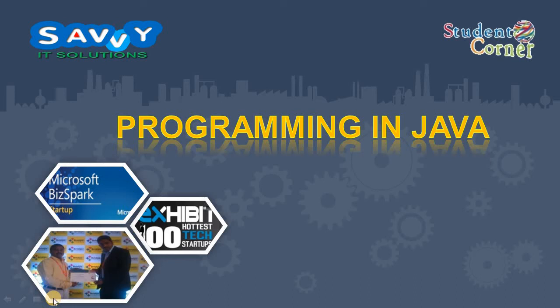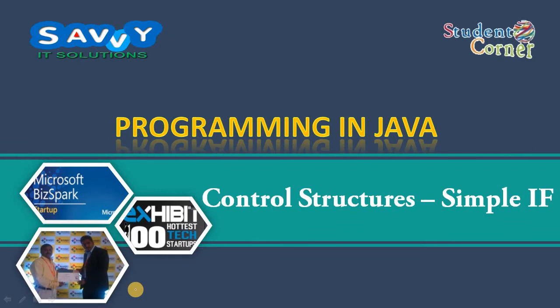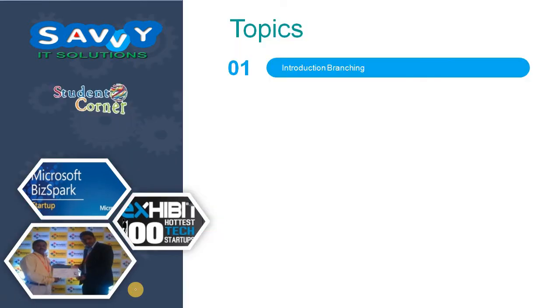Welcome to Savvy IT Solutions. In the last video we discussed about Control Structures introduction, where we explained in detail about what are control structures, why we use them, and the types of control structures. Under these, we are learning the first part: decision making under conditional control structures. In this video we are discussing about introduction to branching.